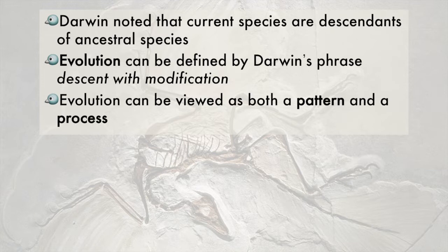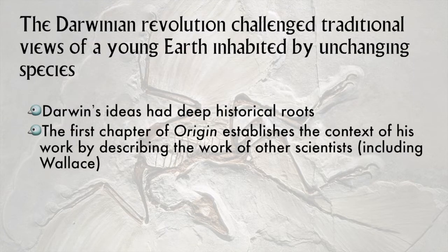Evolution is both a noun and a verb. Biologists view evolution as both an observable pattern in the history of life on Earth, as well as a process that we can see happening today. Darwin's ideas were revolutionary, but timely.